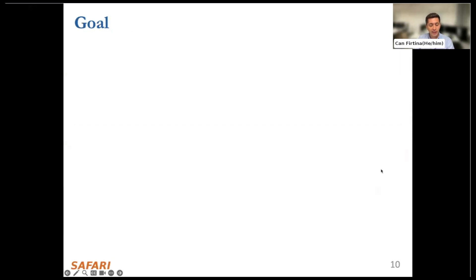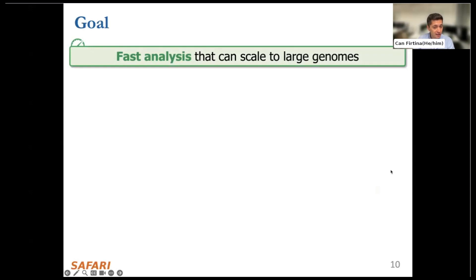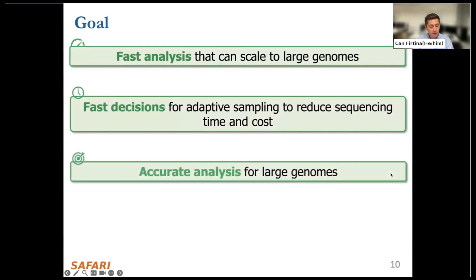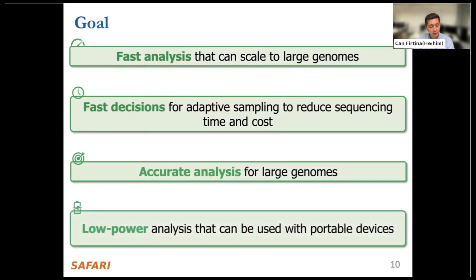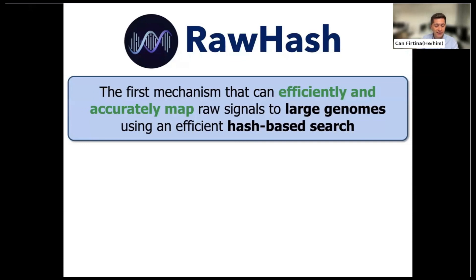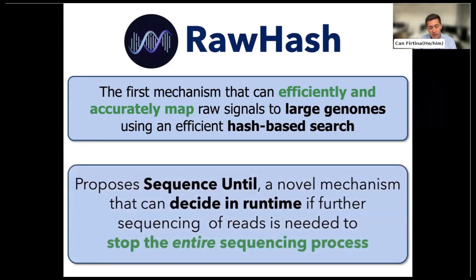Our goal is to perform fast analysis that can scale to large genomes, make fast decisions for adaptive sampling, and perform analysis as accurately as possible, specifically for large genomes. We want to do all these computations at low power so that we can utilize portable sequencing devices. To this end, we propose RawHash — the first mechanism that can efficiently and accurately map raw signals to large genomes using an efficient hash-based search. We also propose Sequence Until, a novel mechanism that can dynamically decide at runtime if further sequencing of reads is needed and stop the entire sequencing process for a particular use case.